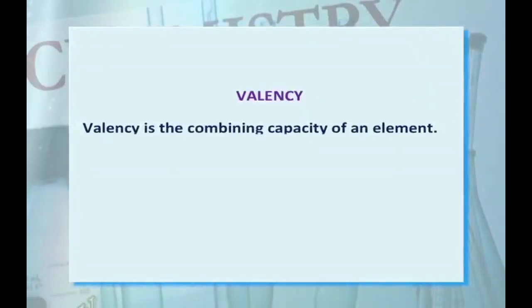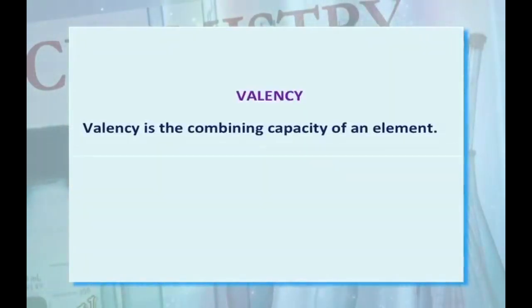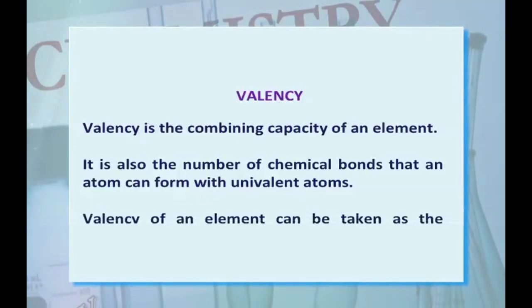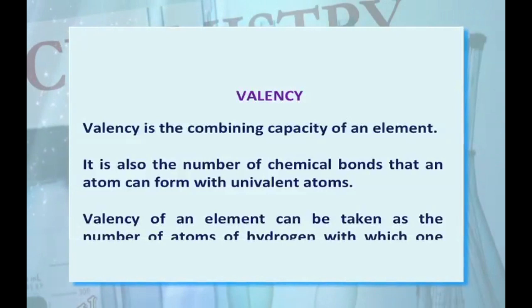Now the next important term is valency. Valency is the combining capacity of an element. It is also the number of chemical bonds that an atom can form with univalent atoms. Valency of an element can be taken as the number of atoms of hydrogen with which one atom of element can combine. Valency and the number of valence electrons are two important terms, let us understand this.